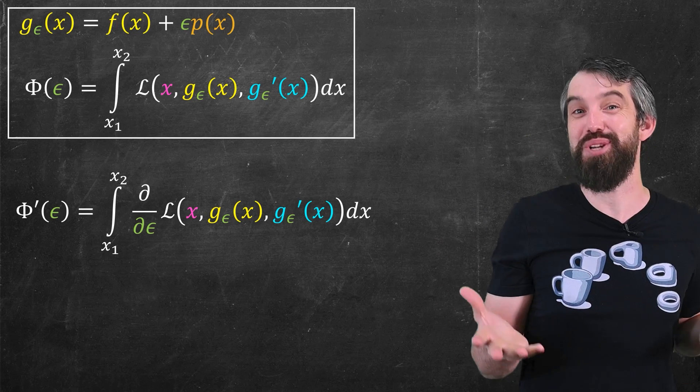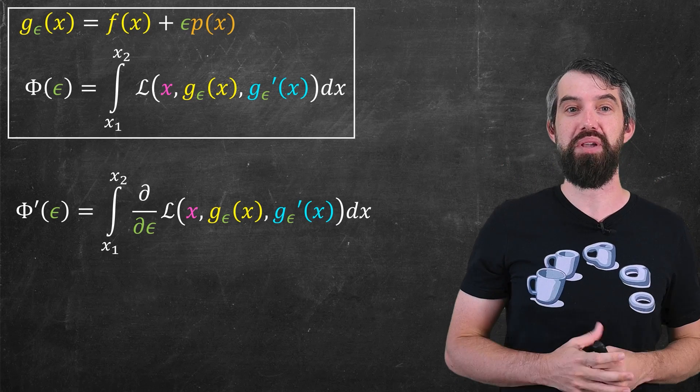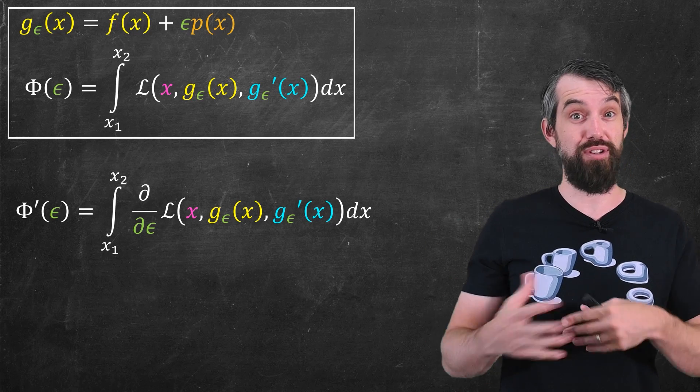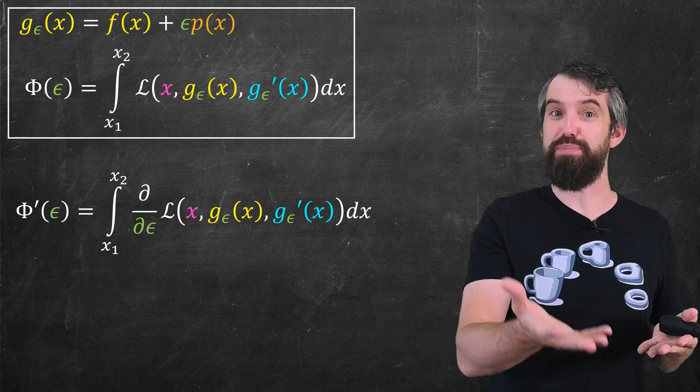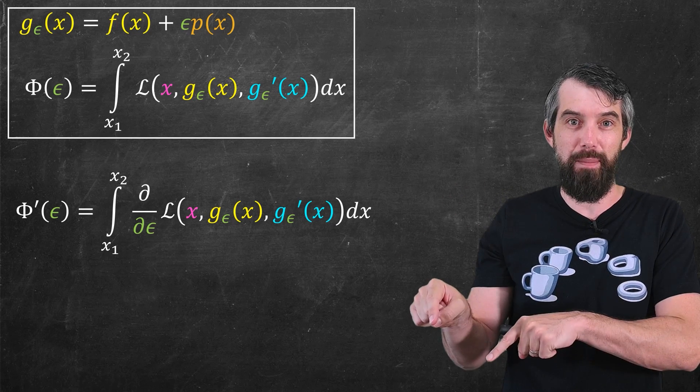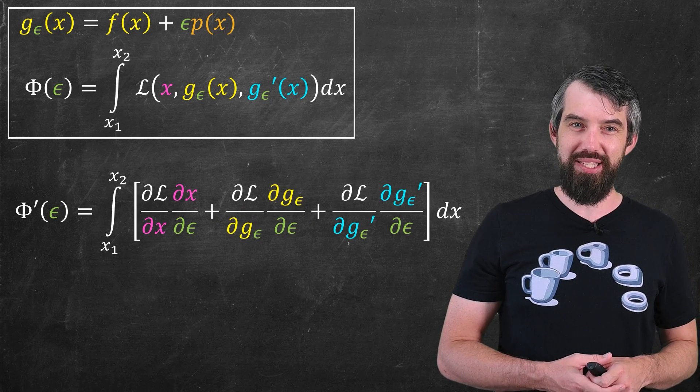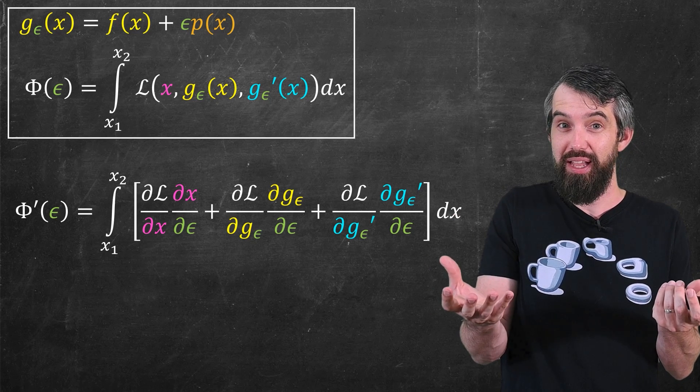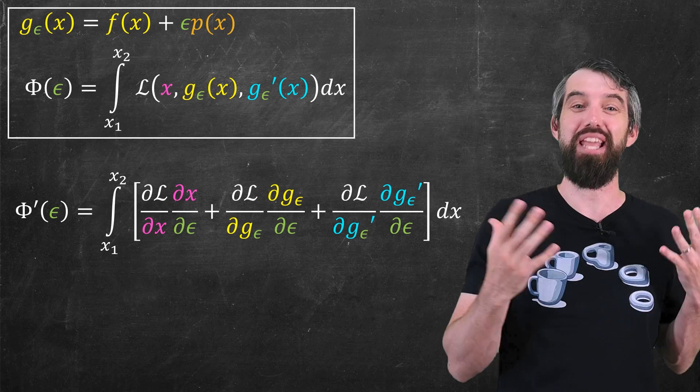Okay, so how do I take the derivative of a multivariable function? I'm going to use a little trick from multivariable calculus, which is the multivariable chain rule. The Lagrangian is a composition here, there's an outside function, whatever the Lagrangian is, and then it depends on the variables x, g_ε, and g'_ε, which themselves both depend on ε. So the multivariable chain rule says the following. It basically breaks the derivative into a sum of multiple derivatives. And if you've never seen this before, I do have an entire video on the multivariable chain rule, you can go check that out if you so wish.